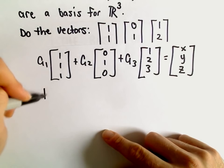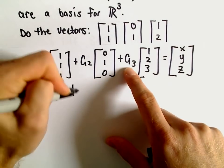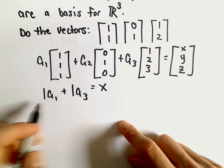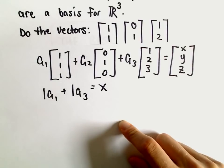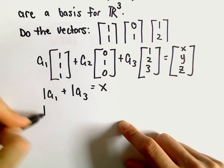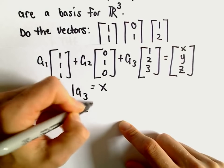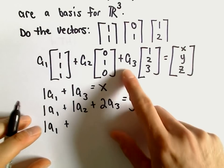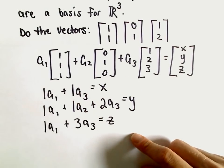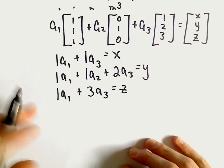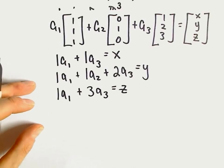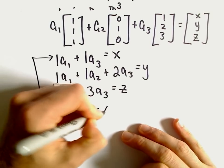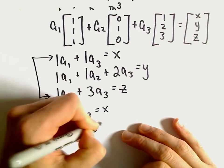So I'm going to write it as just a linear system. So we would have 1a1 plus 0a2 plus 1a3 equals x. And again, I've got some examples about this when we talk about in the video with spanning sets. So this is just really a little bit redundant, just tying those two concepts together, independence and spanning sets. So our next equation would be 1a1 plus 1a2 plus 2a3. We can set that equal to y. And then we would have 1a1 plus 0a2. And then we would have 3a3 equal to z.